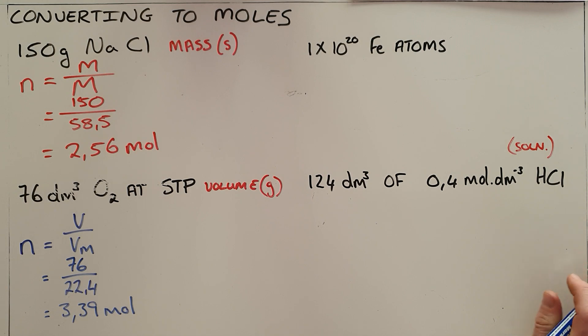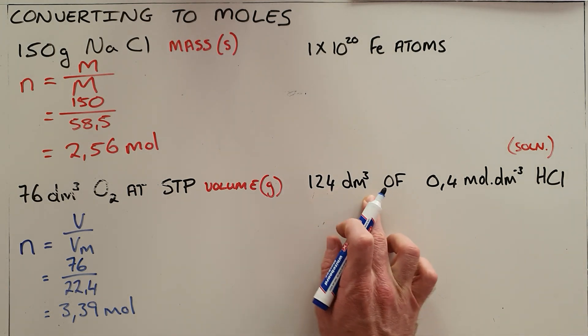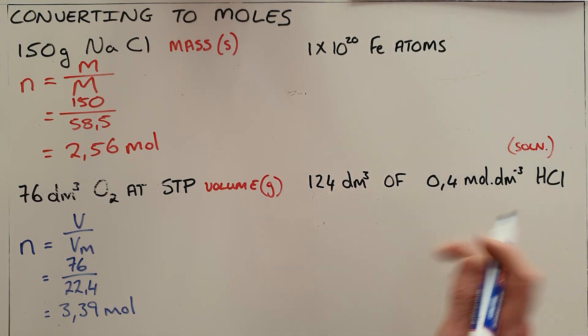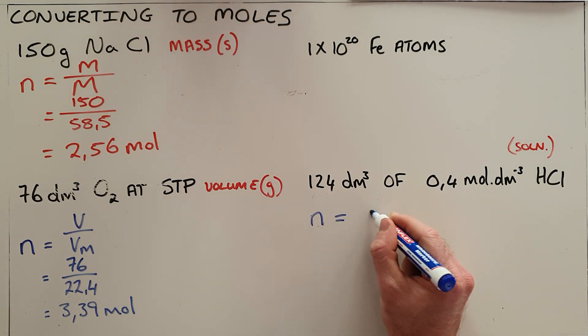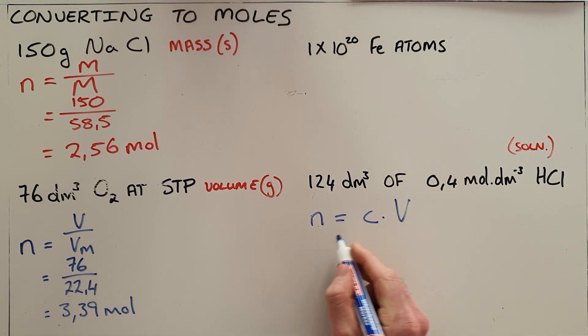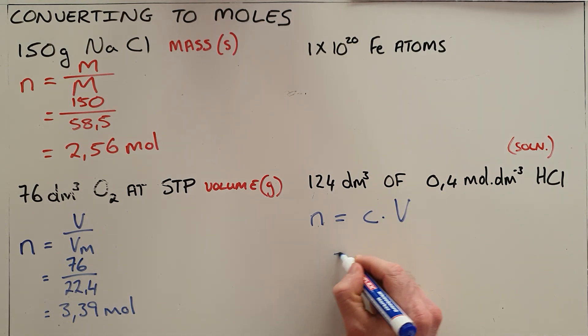The next most common one would be to be given a solution in which you are given a volume of substance as well as a concentration, and you can calculate the number of moles using the following formula: number of moles equals the concentration multiplied by the volume.